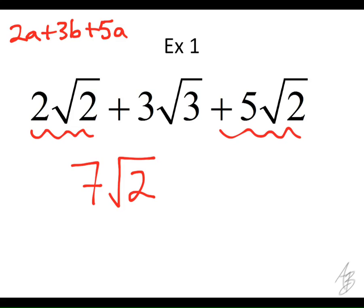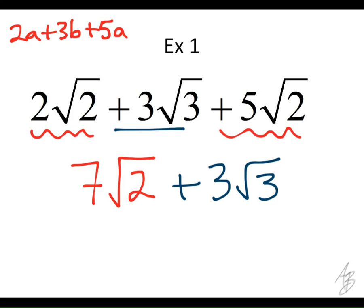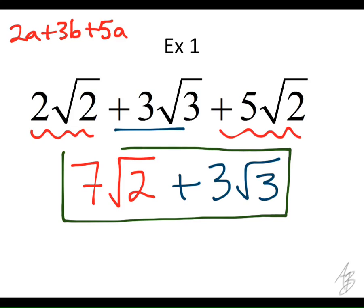So we combine 2 square root of 2 and 5 square root of 2 and get 7 square root of 2. Does anybody have any questions about how we got that? So what do we do with that 3 square root of 3? Can we add that on here too? No, exactly. We're going to bring it down. We can't add it together because it's not a like term with the square root of 2, so it's going to be 3 square root of 3. And that's all you can do. You cannot add a square root of 2 to a square root of 3, or a square root of 5, or a square root of 7, or really any other square root unless they're like terms.